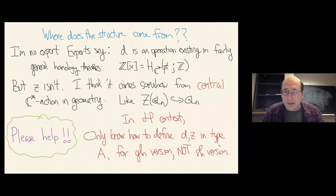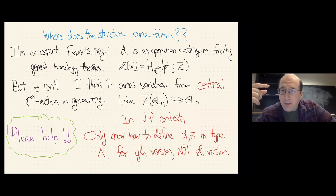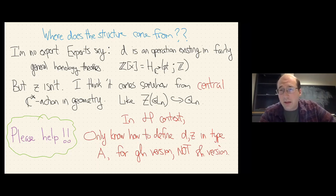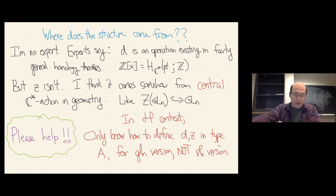One shadow of this central C*-action: I can define this SL2 action on polynomials in N variables, but I can't define it on polynomials in N variables modulo E_1. That would be the polynomial ring associated to SL_N rather than GL_N. There's something in the C*-action that really requires you to work over GL_N instead of SL_N. If you're somebody who likes geometry and wants to tell me where this SL2 action comes from, I would love to know.